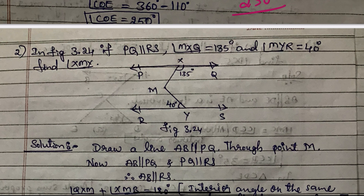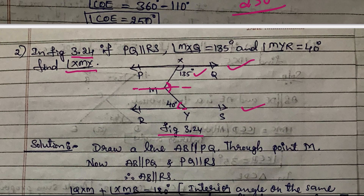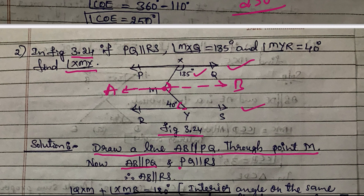Next important problem. In figure 3.24, PQ is parallel to RS. Angle MXQ equals 135 degrees and angle MYR equals 40 degrees. Find angle XMY. Before finding this angle, we draw a construction: draw a line AB parallel to PQ through point M.